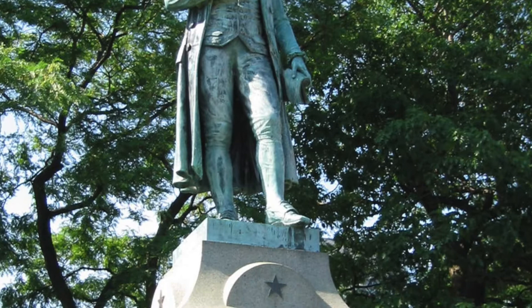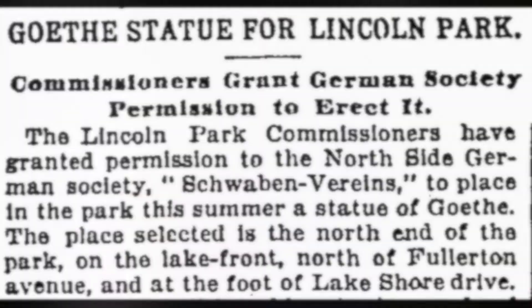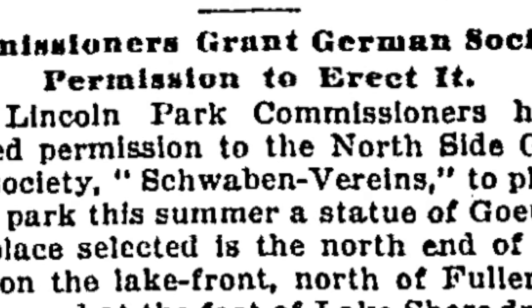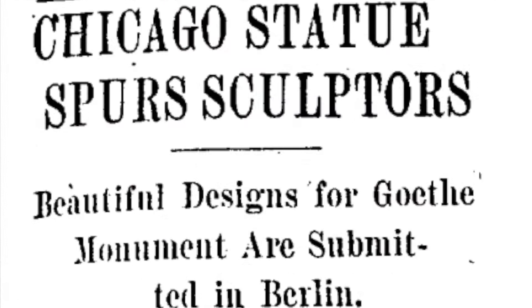The first statue they raised was a portrait of Schiller, and thousands of people attended the unveiling. Following the success of the Schiller statue, one of Chicago's German social clubs, the Schwabenverein, commissioned a statue of Goethe in 1896. In 1910, the project finally began to move forward. That year, a competition was held to determine the statue's sculptor, and the winner was announced as Hermann Hahn, a sculptor from Munich.